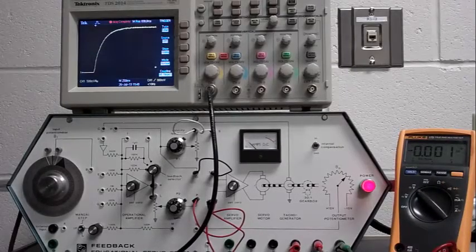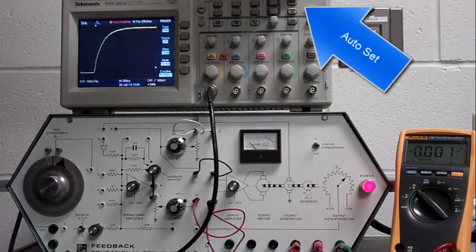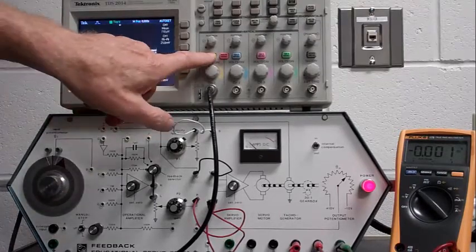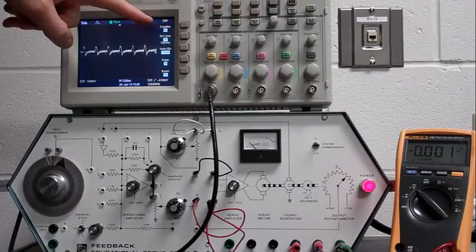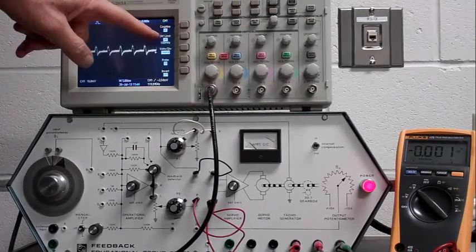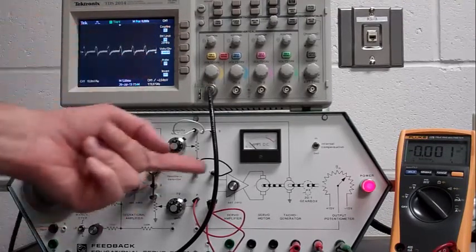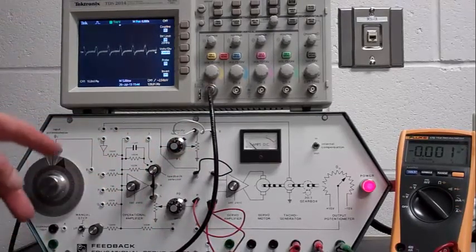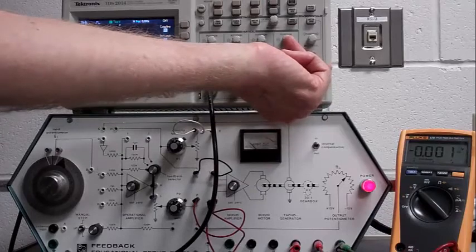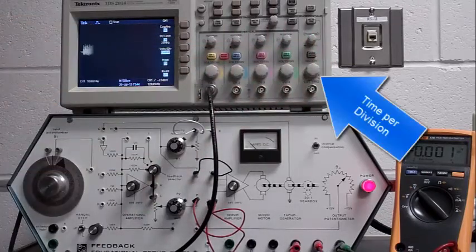Now I'll show you how to collect that step response. You'll be starting from warm up. And probably pressing auto set is a good way to begin. Channel one. We want to measure the signal coming in channel one. We want DC. We want bandwidth limit turned on. We want times one probe because we're using this probe.